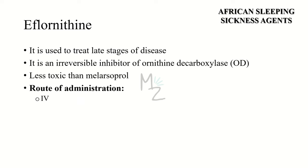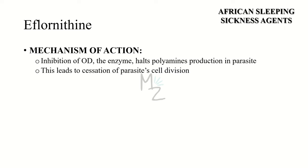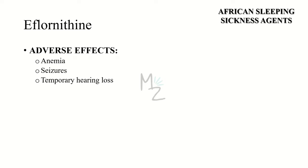The last drug for African sleeping sickness is eflornithine. It is used to treat late stages of the disease and is an irreversible inhibitor of ornithine decarboxylase (ODC). It is less toxic than melarsoprol and is administered intravenously. Mechanism of action: inhibition of ornithine decarboxylase halts the production of polyamines in the parasite, leading to cessation of cell division. Adverse effects include anemia, seizures, and temporary hearing loss.